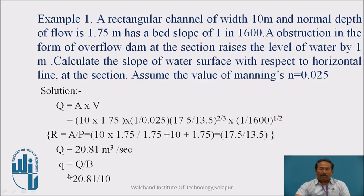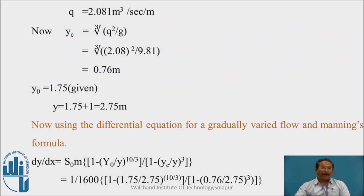Small q, it is discharge per meter width. So Q upon b, width is 10, it is 20.81 upon 10, which is 2.081 meter cube per second per meter. We cannot say it is meter square per second. It is meter cube per second per meter always.